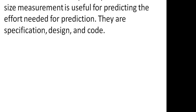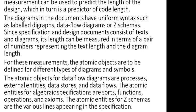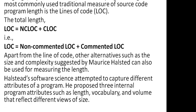Length in size measurement is useful for predicting the effort needed for production. Length attributes are divided into three parts: specification, design, and code. Specification and design depend upon documents that combine text, graphs, and special mathematical diagrams and symbols. The diagrams in the documents have uniform syntax as labeled diagrams and data flow diagrams. Length is measured in terms of the number of layers representing text length and diagram length. Diagram length uses measurements based on atomic objects defined in different types of diagrams, such as data flow diagrams, transition diagrams, processes, external entities, data sources, and data flows.